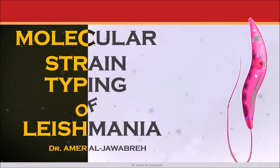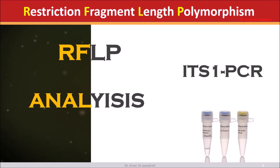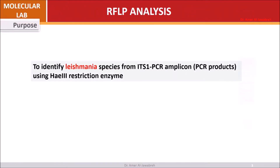Molecular Strain Typing of Leishmania. Restriction Fragment Length Polymorphism (RFLP) analysis using ITS1 PCR. Purpose: to identify Leishmania species from ITS1 PCR amplicon PCR products.